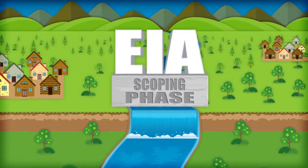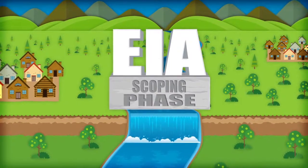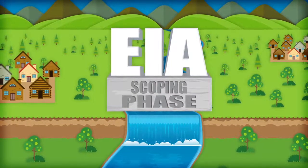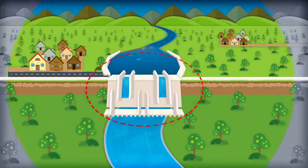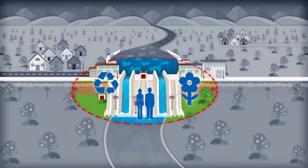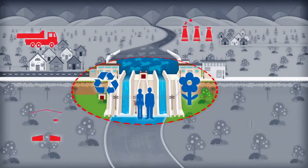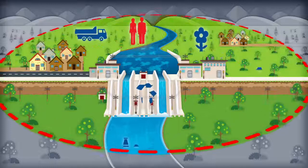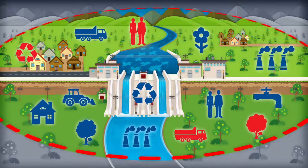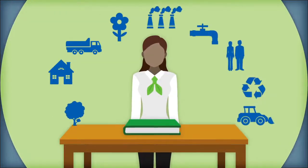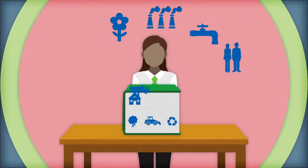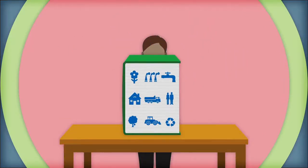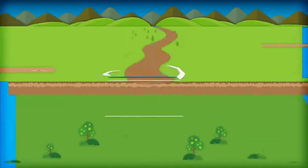Therefore, identifying the relevant issues and concerns from the beginning is an essential part of the EIA process. If the scope is too narrow, the EIA might overlook significant impacts that are not necessarily obvious but real and possibly negative, or leave out stakeholders who would be affected by an activity or project. If the scope is too broad or unclear, the EIA can become overstretched and overburdened with irrelevant issues, require unnecessary efforts, and distract from the analysis of key issues.